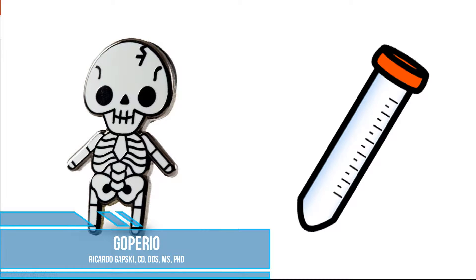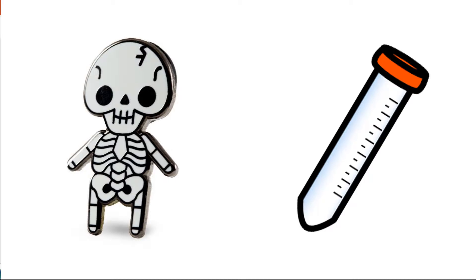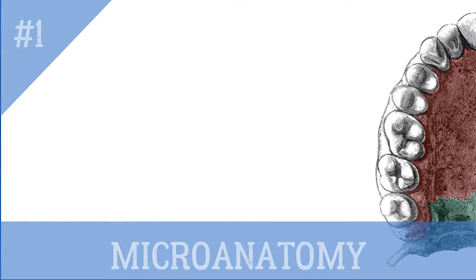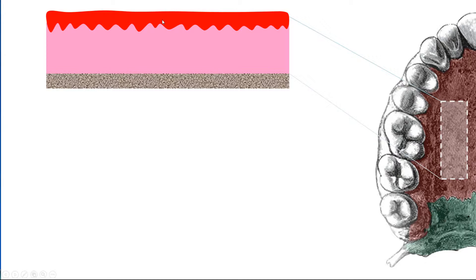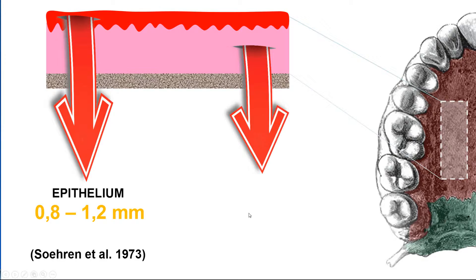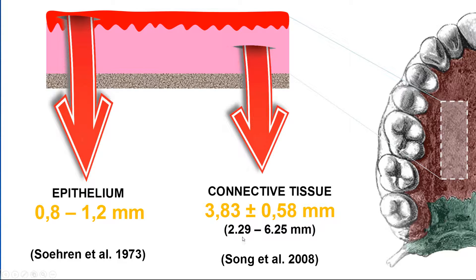To fully understand how to manipulate the connective tissue that you just heard from your patient, you need to know the basics of anatomy and the composition of the connective tissue graft. The microanatomy of the tissue of the palate has the following compositions: one portion of epithelium and underlying connective tissue. The epithelium has, on average, 0.8 to 1.2 mm, while the connective tissue has 3.83 mm, ranging from 2.29 to 6.25. This range depends on the patient and also the location, where the premolars usually have the thicker tissue.